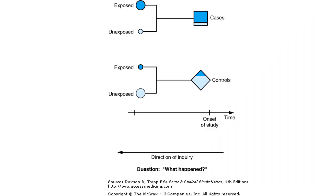In this simple presentation of case-control study design, among the cases a certain proportion were exposed in the past, and among the controls a certain proportion were exposed in the past. We compare these two proportions — we'll discuss measures of association in future sessions. Notice the directionality: time moves forward, but the direction of our inquiry goes backward to the past.